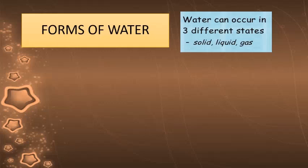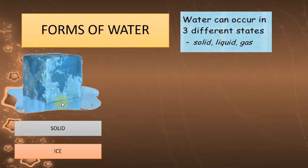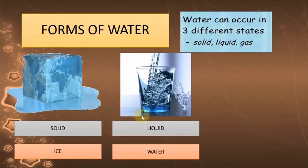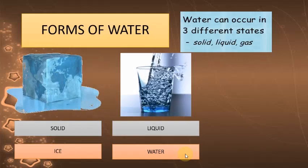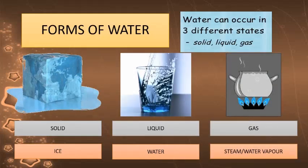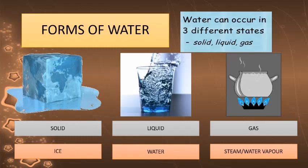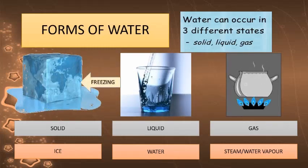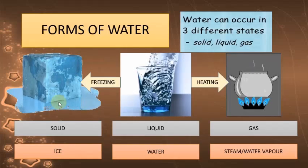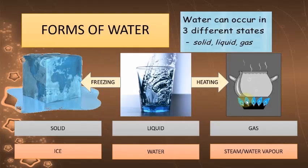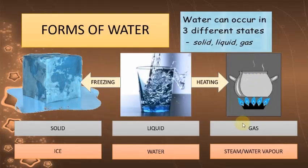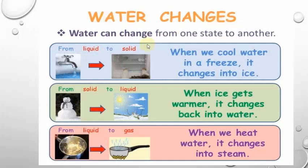Forms of water: water can occur in three different states — solid, liquid, and gas. Ice is the solid state of water. Water is the liquid form. Steam is the gaseous form of water. When we cool or freeze water, it changes to ice. When we heat or boil water, it changes to water vapor or steam.